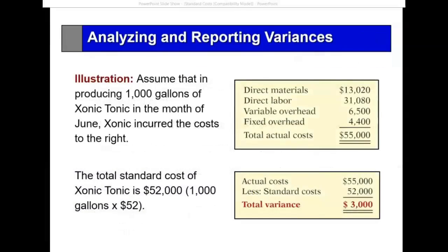Here's an example. Assume that we produce 1,000 gallons of Zonic Tonic in the month of June. The actual costs are: $13,000 for material, $31,000 for labor, plus variable overhead and fixed overhead — totaling $55,000. Recall that my standard was $52 a gallon, and if I produce 1,000 gallons I should have incurred $52,000.